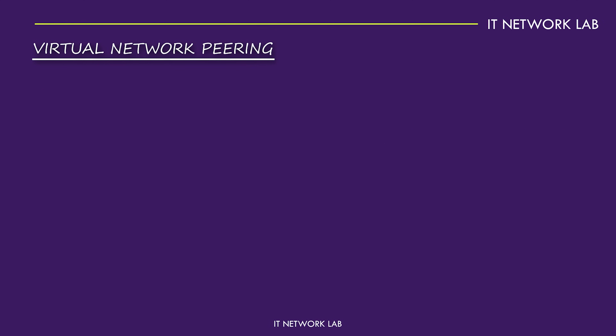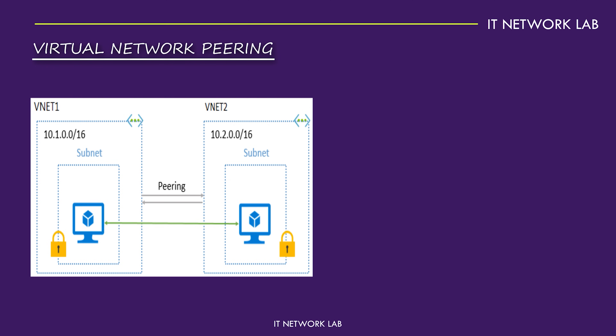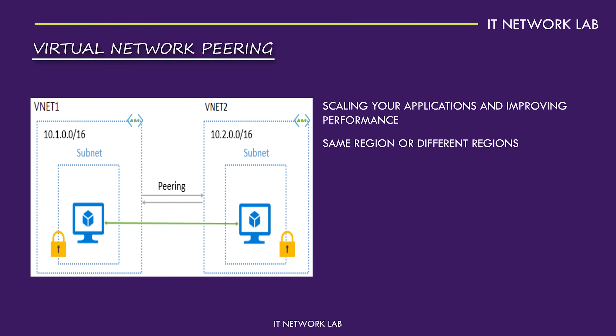Virtual Network Peering is a feature that lets you connect two VNets so they can communicate with each other as if they were on the same network. This is incredibly useful for scaling your applications and improving performance. With VNet Peering, you can connect VNets in the same region or different regions, allowing your resources to interact seamlessly. Peering connections are private and secure, with no need for additional gateways or VPNs. This means you can extend your network across the globe, ensuring your applications are always close to your users.